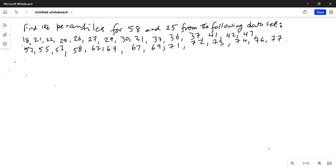We are asked to find the percentile for 58. We look at the numbers below 58 in the data set. We count how many numbers are below 58 in the data set. So it's 1, 2, 3, 4, 5, 6, 7, 8, 9, 10, 11, 12, 13, 14, 15, 16, 17, and 18. So 18 numbers are below 58 in the data set.